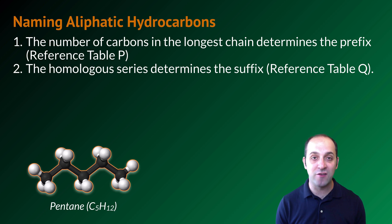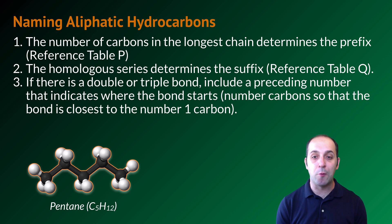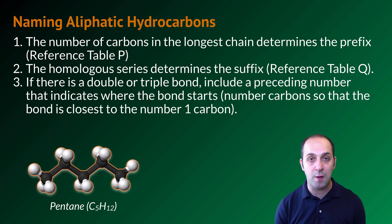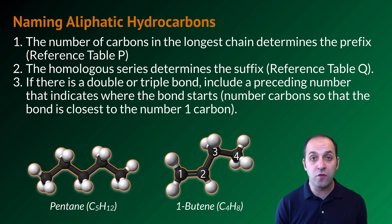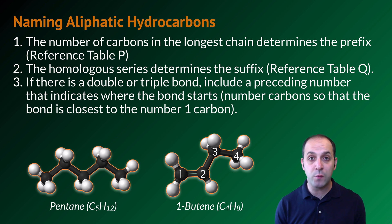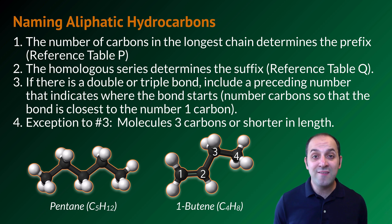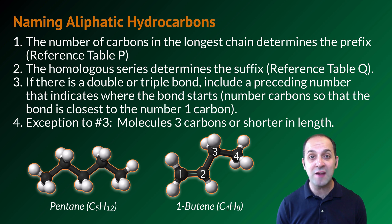The third rule is that if there is a double or triple bond, we put a number in the name that tells us where the bond starts. We number our carbons so that carbon number one is closest to the double or triple bond. Here's an example: this is 1-butene. We number so that the carbon closest to the double bond is number one — that's the carbon on the left — and since the double bond is between carbons one and two, it's 1-butene. The only exception to rule three is for molecules three carbons or shorter, where you don't need to number because there's really only one place the double or triple bond could go.